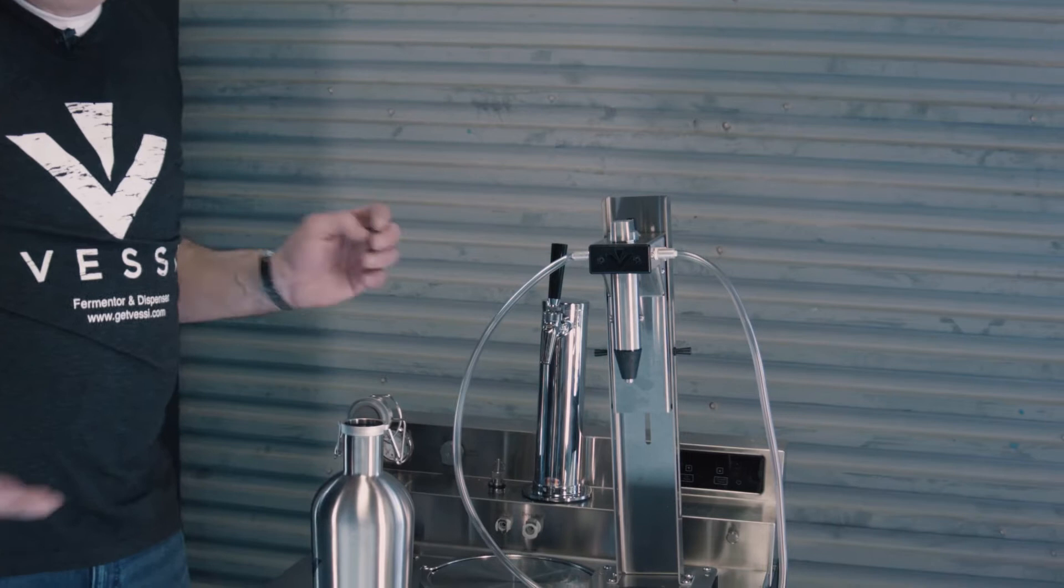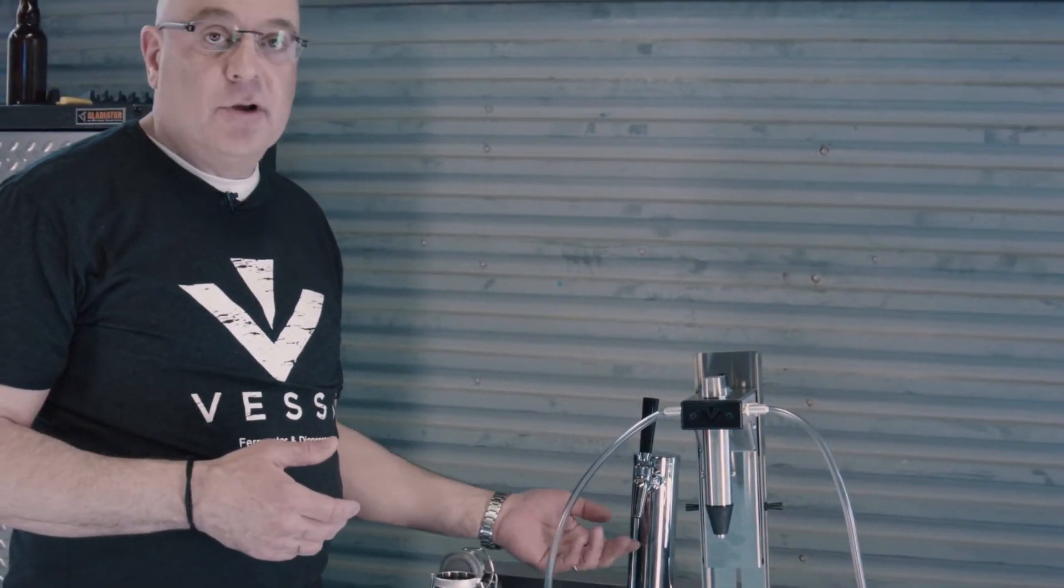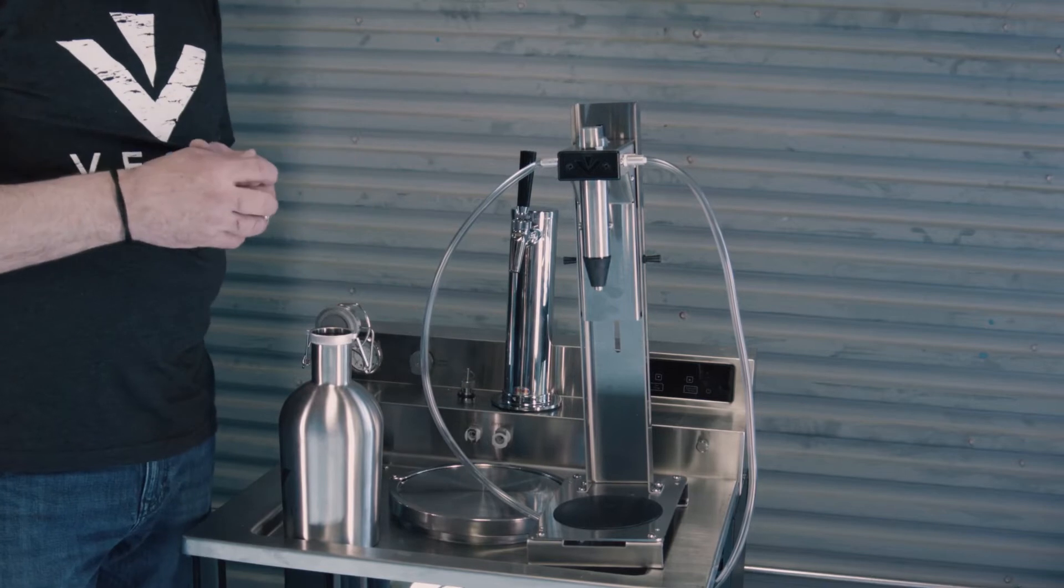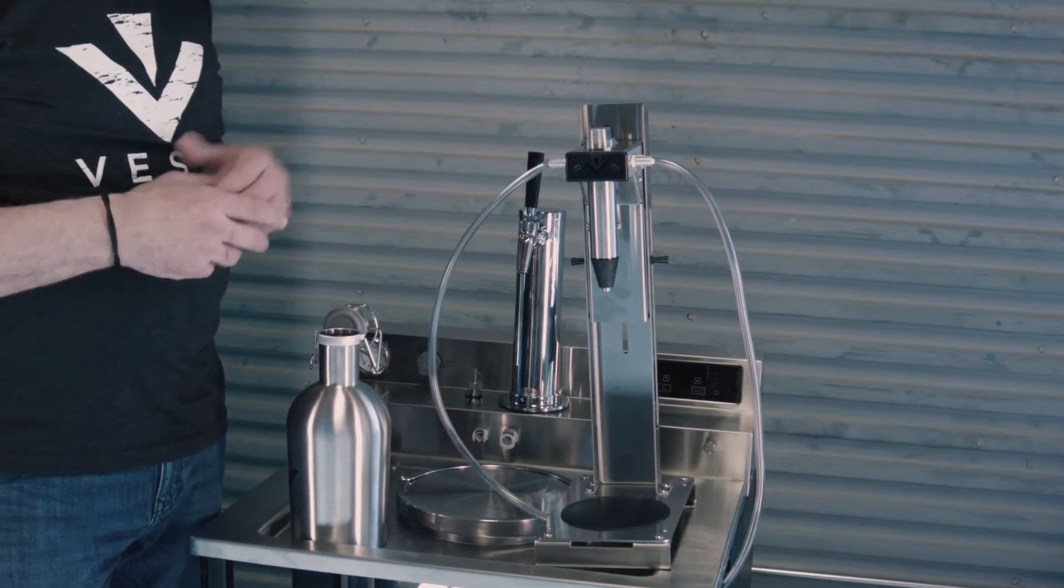What you would need to do is simply do it like a lot of brewpubs do in filling growlers. You would have an attachment that goes into your faucet or perhaps in the beverage out port in the VESI itself with a length of beer line and an attachment for growler filling.